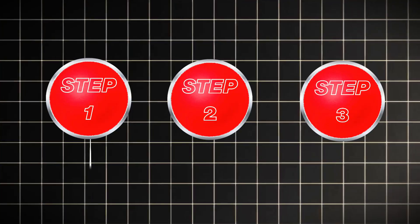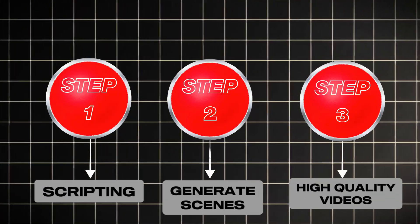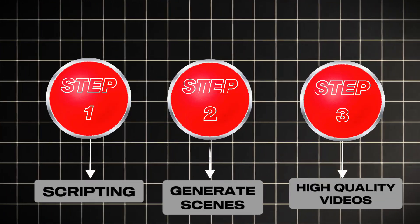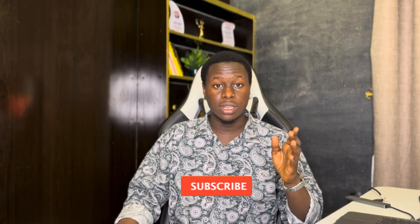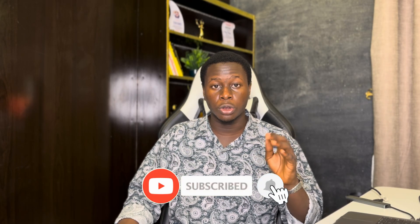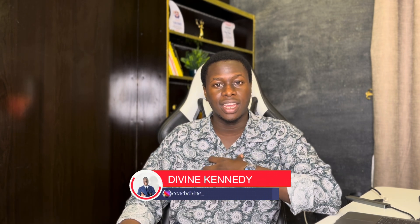So if you watch to the end of this video, I'm going to be sharing with you everything step by step — from how I script my videos, how I generate the scenes, then how I turn them into high quality videos in Google Video 3, maintaining consistent characters. Make sure to subscribe to the channel and turn the bell notification on. My name is Vine Kennedy, and I share with you how you can start and scale your online business using AI tools. Let's get into the tutorial.